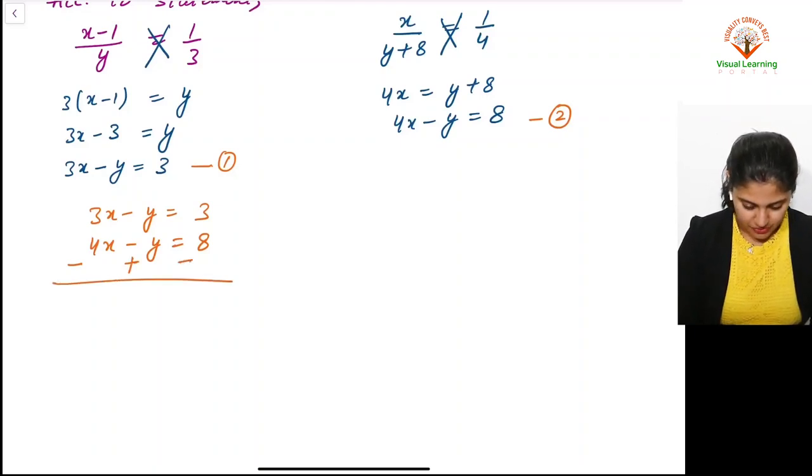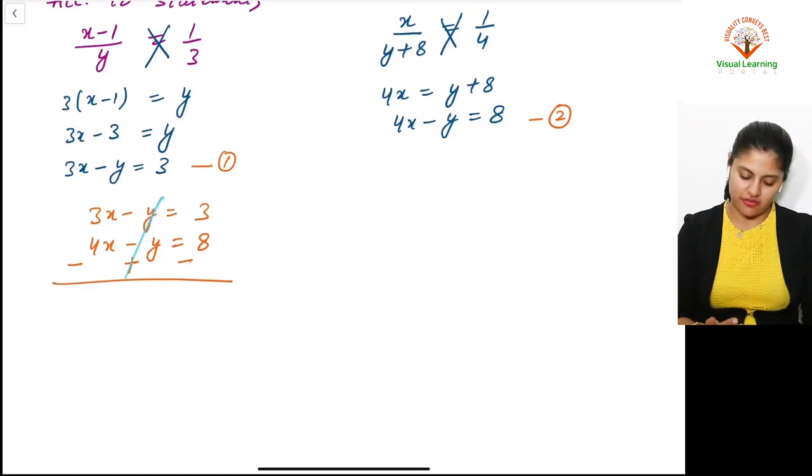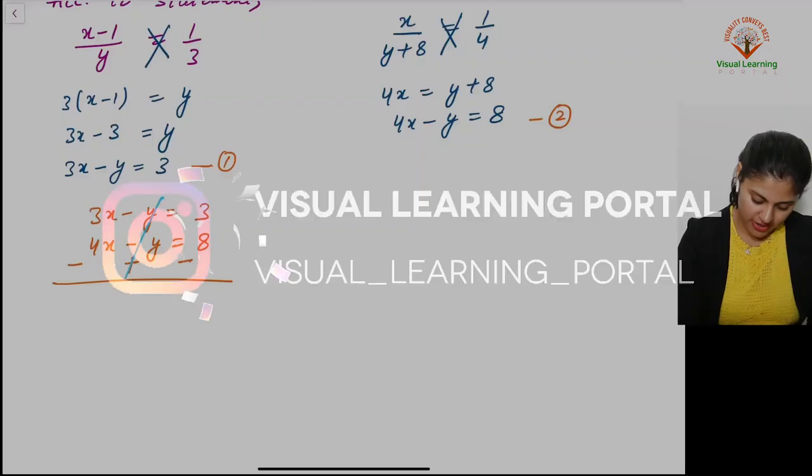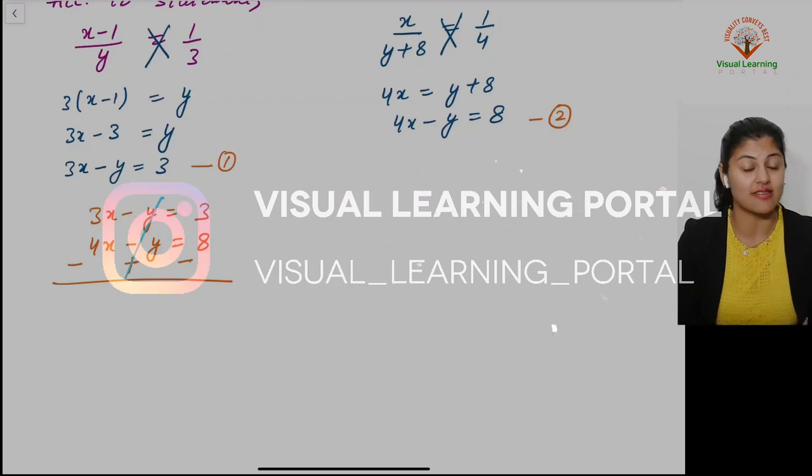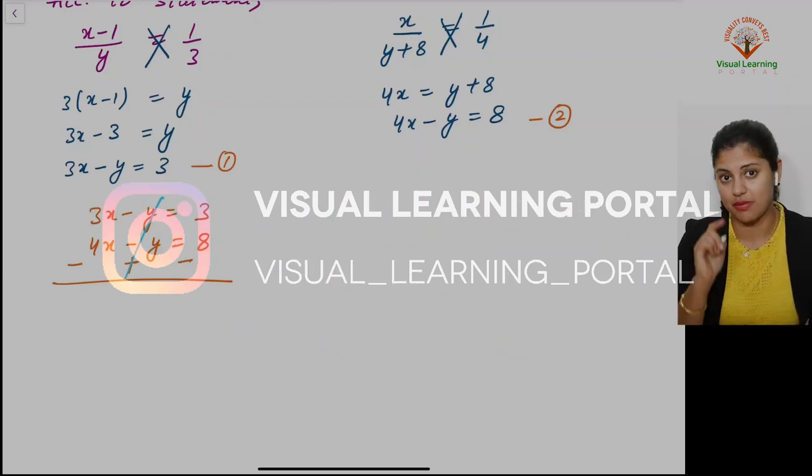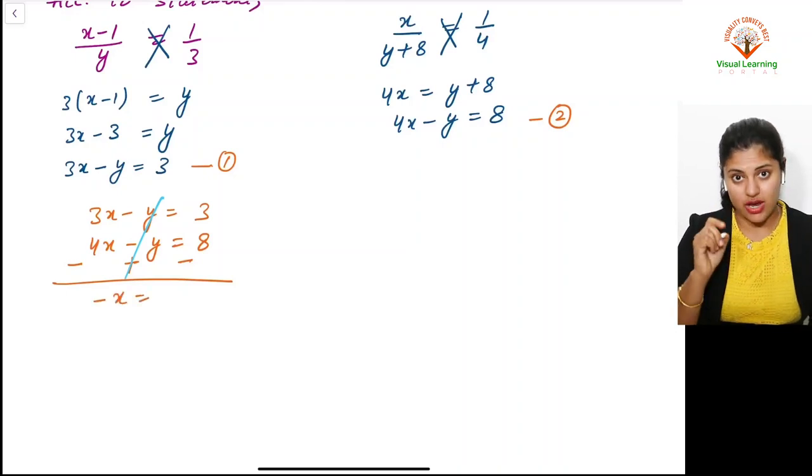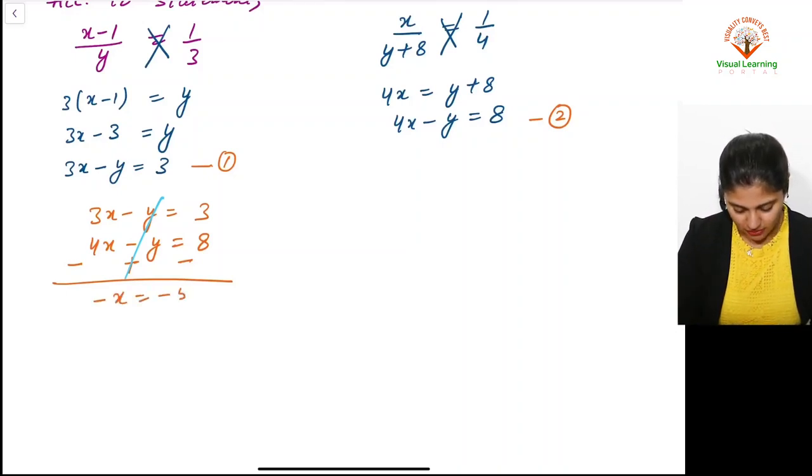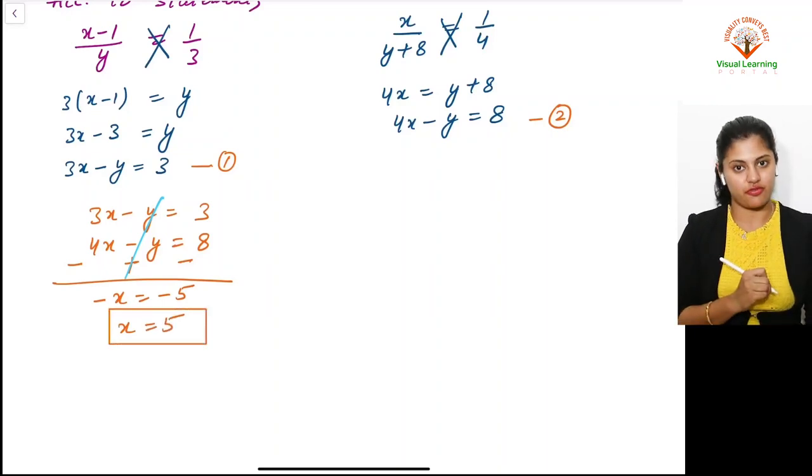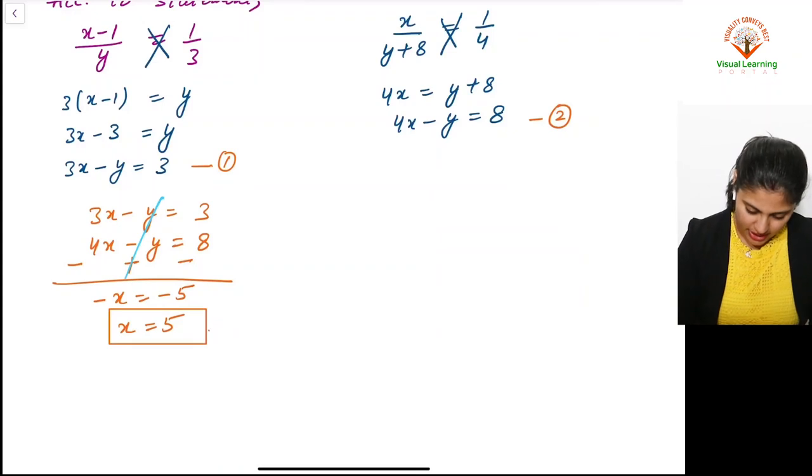+y and -y is zero. 3x plus... actually 4x changed sign so it's 3x - 4x, which equals -x. Three minus eight will be -5. So -x = -5, therefore x = 5.